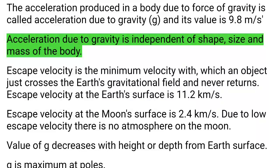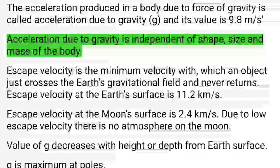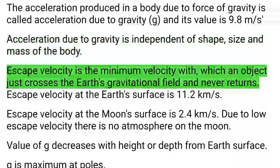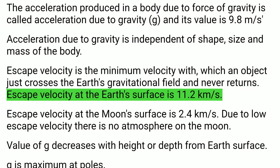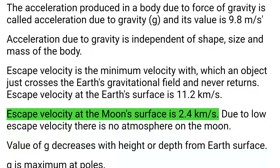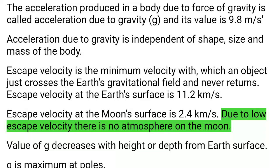Acceleration due to gravity is independent of the shape, size, and mass of the body. Escape velocity is the minimum velocity with which an object just crosses the Earth's gravitational field and never returns. Escape velocity at Earth's surface is 11.2 km/s, and at the moon's surface is 2.4 km/s.